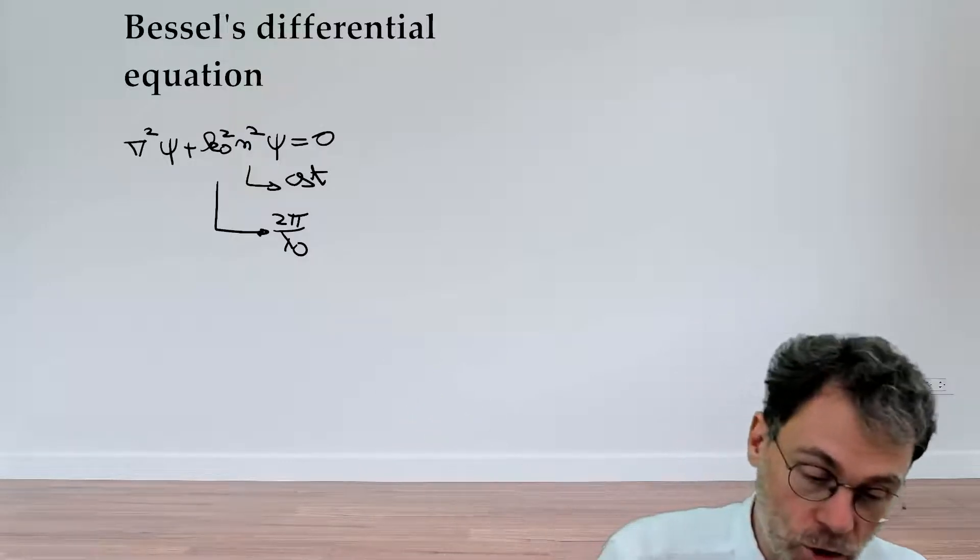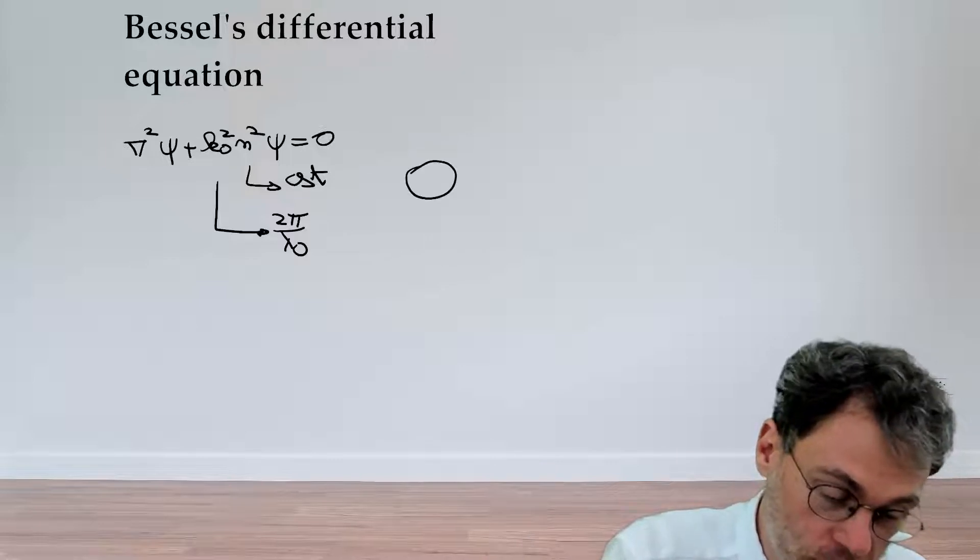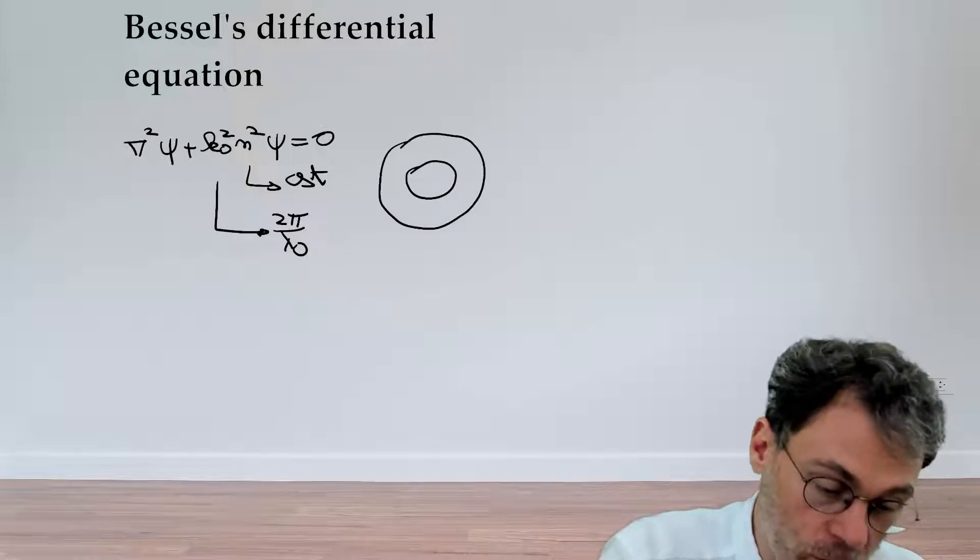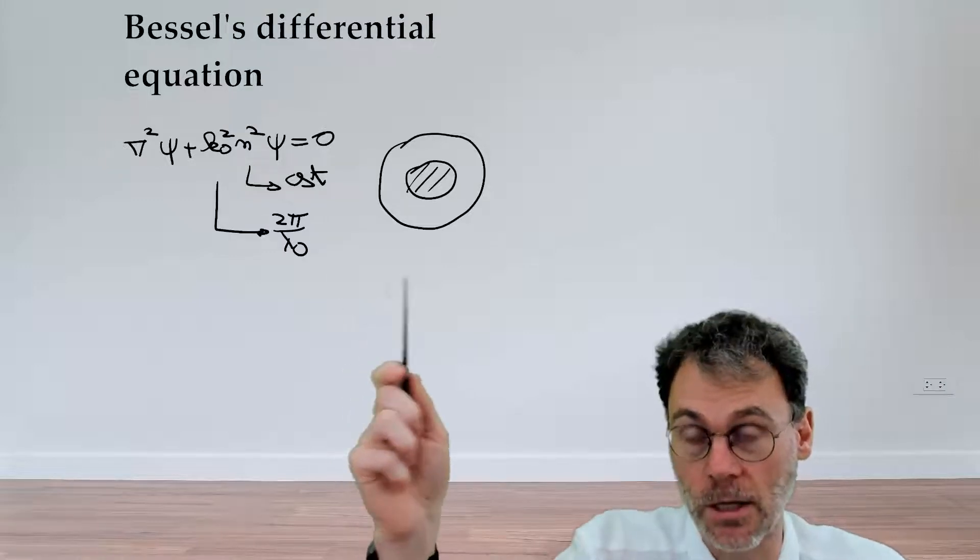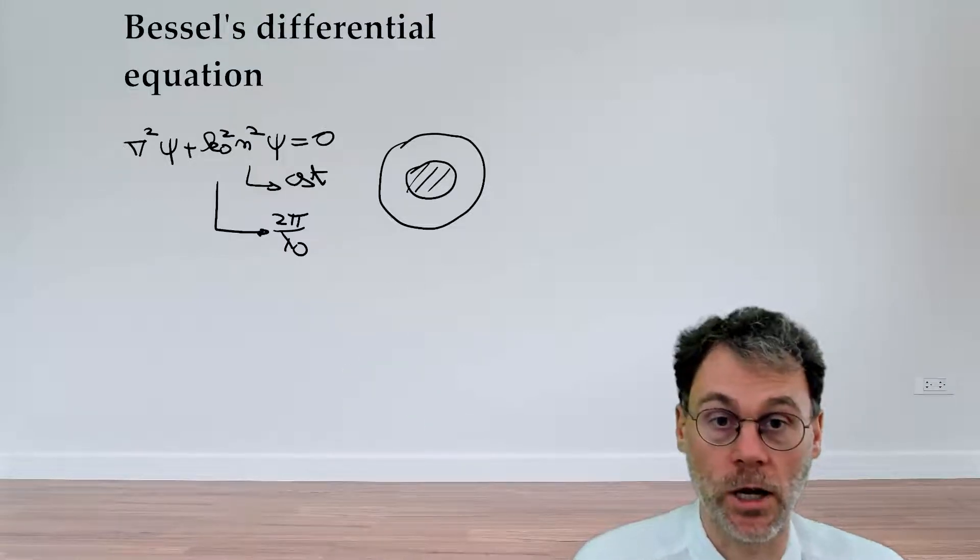We're interested in solving this equation in a cylindrical coordinate system because, for example, we want to figure out what the eigenmodes are of an optical fiber, which has this cylindrical cross section.